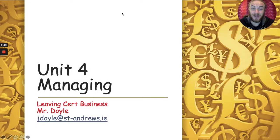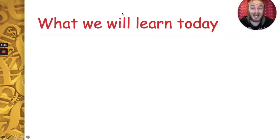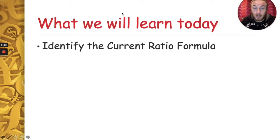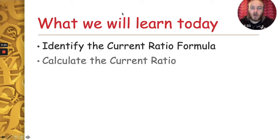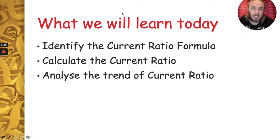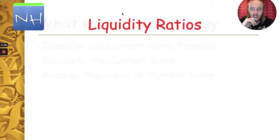Hello and you're very welcome to another video in our series on Unit 4 for Leaving Certificate Business. In this video we're going to start looking at some liquidity ratios. We're going to look at the current ratio formula, then we're going to calculate the current ratio using a sample question, and then we're going to look at what the trend of a current ratio means, or what current ratios actually mean in general when we look at the figures.